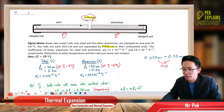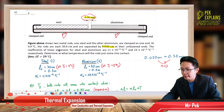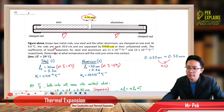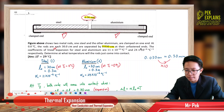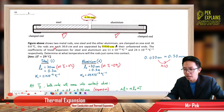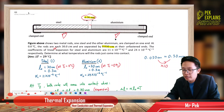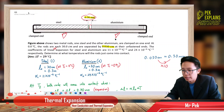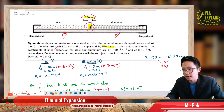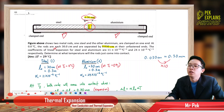When they expand, looking at the coefficient of linear expansion — this is called alpha — this is actually the ability of the material to expand. Aluminium has a bigger alpha, meaning aluminium expands faster compared to steel. So the total expansion of aluminium plus the expansion of steel will equal 0.3 mm.